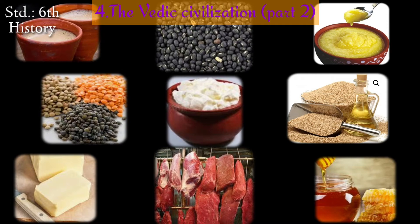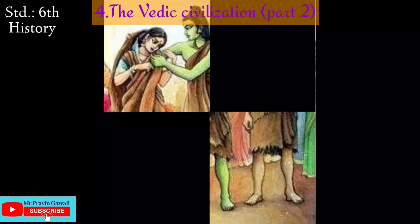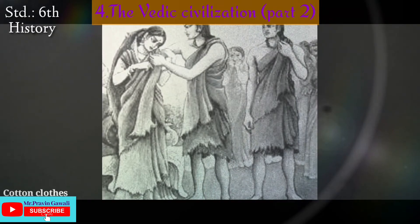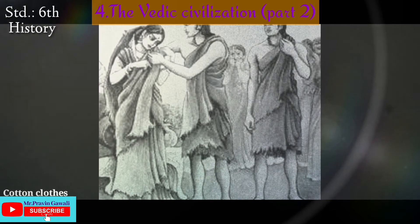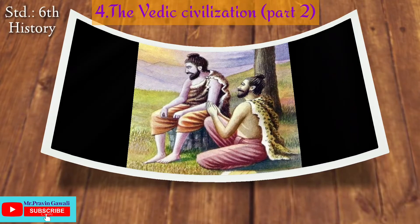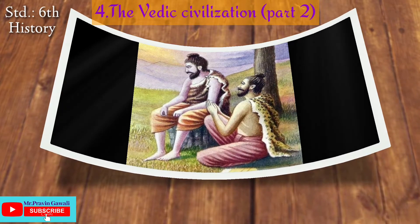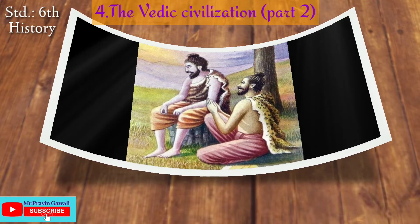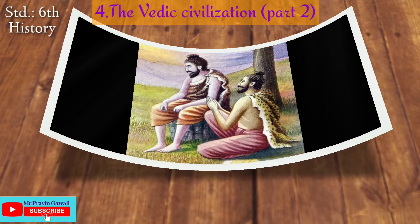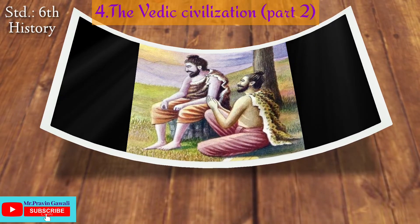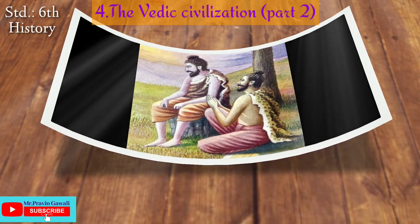Regarding clothing in the Vedic period, people used cotton and woolen garments. They also used valkals — clothes made from barks of trees. Animal skins were also used as clothing. See the pictures to understand what valkals are: they are clothes made from the barks of the tree, which people used to make and wear.